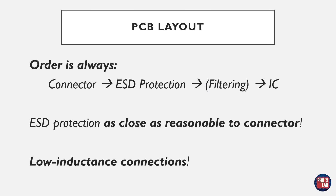We're almost ready to move over to choosing a suitable TVS diode for a particular application and then looking at how I've done that on a PCB layout. The order we want to keep is: the connector essentially on the edge of the PCB, directly adjacent and as close as possible we want the ESD protection, then any filtering for EMI purposes after the ESD protection, and then traces leading to the IC. ESD protection should be as close as reasonably possible to the relevant connector, and we want to use low-inductance connections — the ground connection needs to be short and wide, ideally with a via down to a low-inductance ground plane.